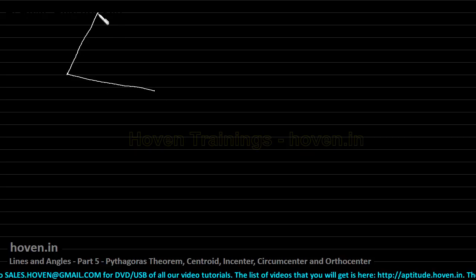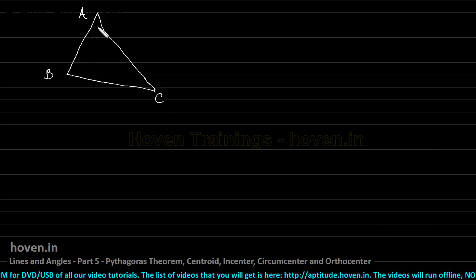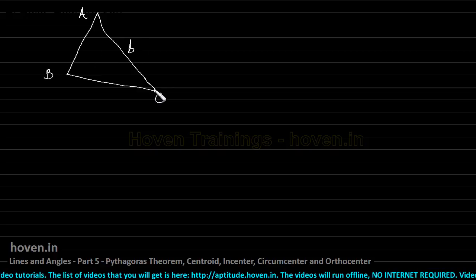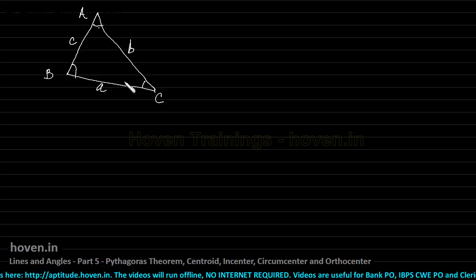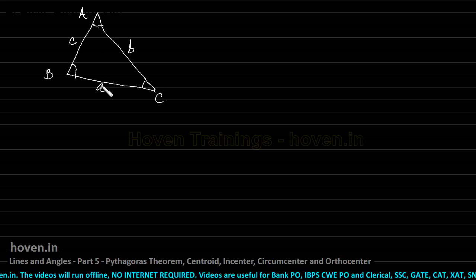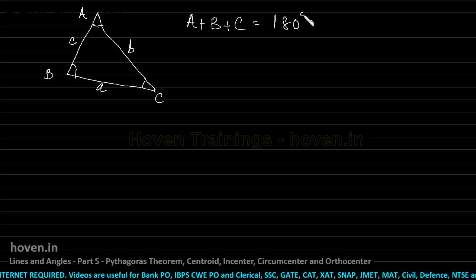A triangle is usually drawn with vertices A, B, and C. The side opposite to vertex B is called small b, the side opposite to vertex C is called small c, and the side opposite to vertex A is called small a. If A, B, C are the angles, then a, b, and c are the lengths of the sides opposite to each angle. We already know that A plus B plus C equals 180 degrees.